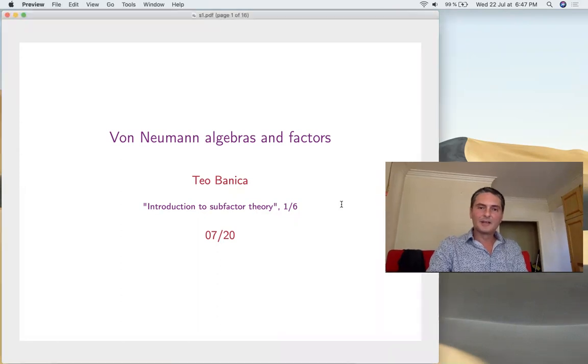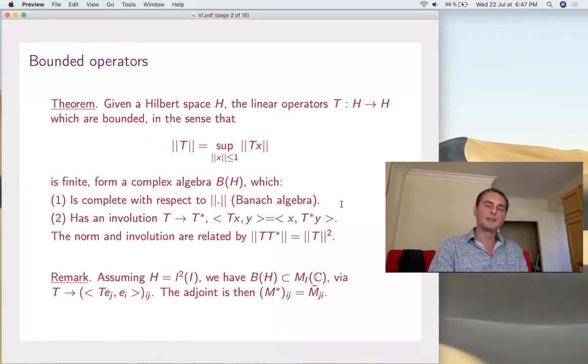In order to get started, we need some operator theory. We'll take a Hilbert space H. Basically, this will be the unique separable Hilbert space L² of any measurable space. I'm interested in the linear operators from H to H which are bounded in the sense that this norm, the usual norm, is bounded. What's to be known about this is that this forms a complex algebra, because if you compose or make sums, you have inequalities showing it's bounded too. Then this algebra of operators, B(H), is complete with respect to the norm because you have pointwise convergence and that's your limit. It's not hard to prove.